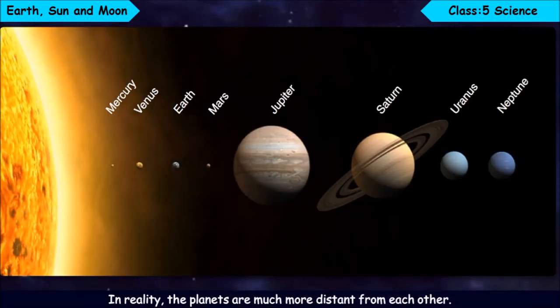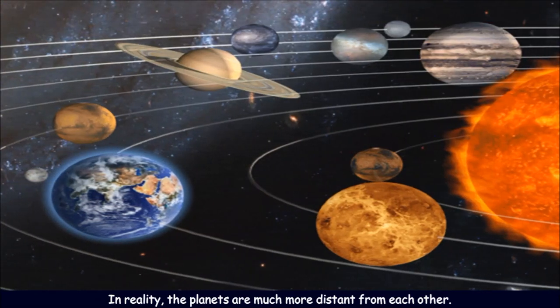Look at the diagram given for the solar system. In reality, the planets are much more distant from each other. This diagram gives us a rough idea of how and where each planet is placed.